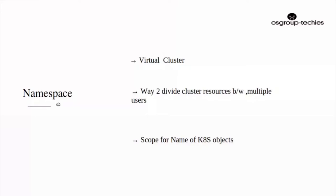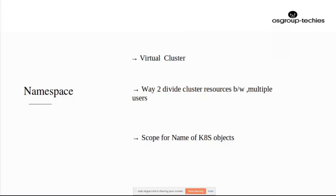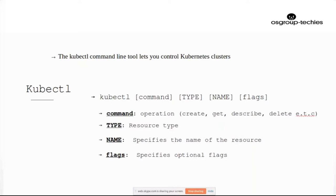Going back to kubectl — he already explained it, but just to reinforce: kubectl then a command which is an operation, like create, get, delete, describe, config, and so on. Then you have a type, which is the resource type — pod, replication controller, replica set, deployment, ingress, service, and many others. Then you have a name — the name given to your resource. And there are optional flags like -n or --namespace.